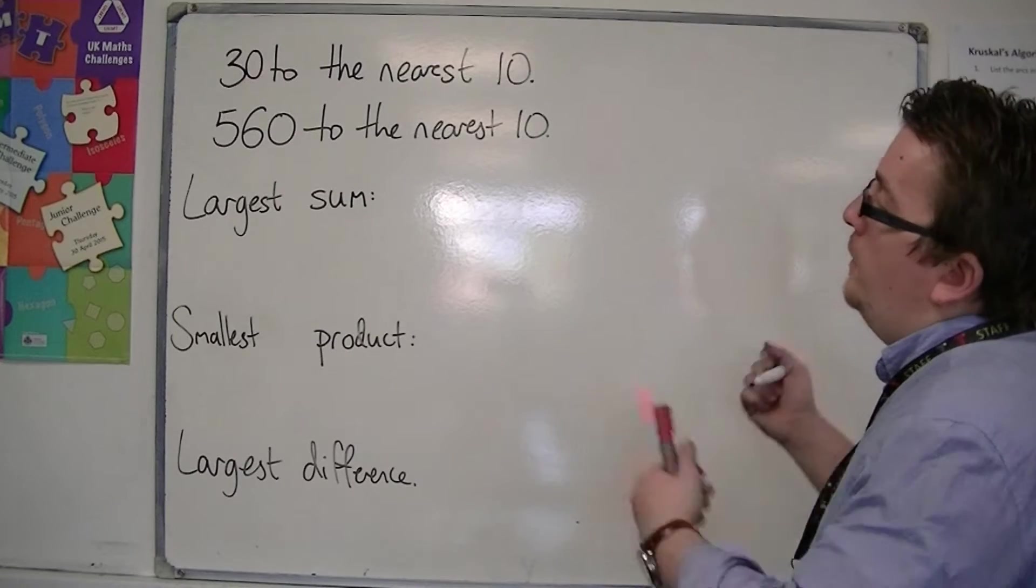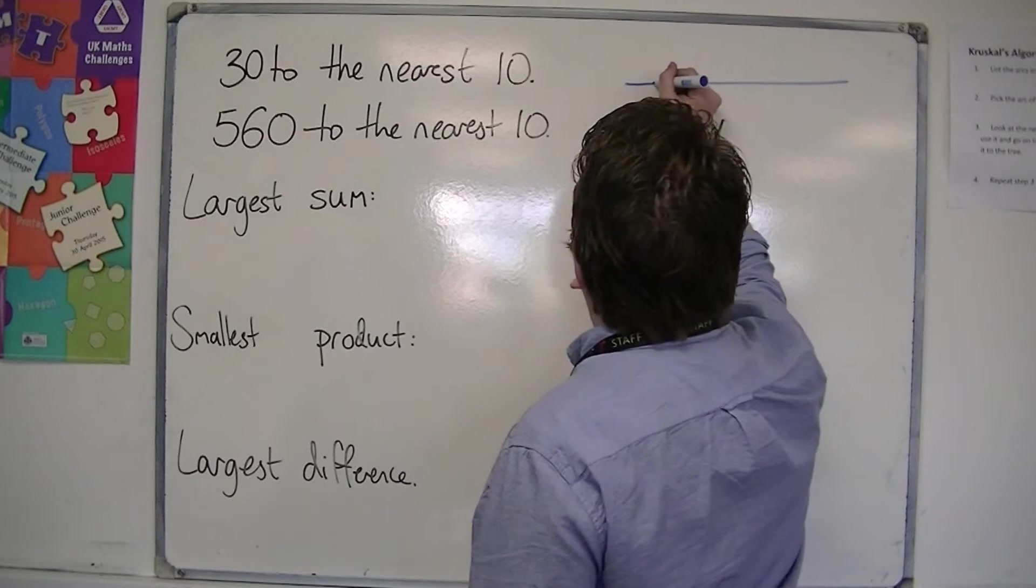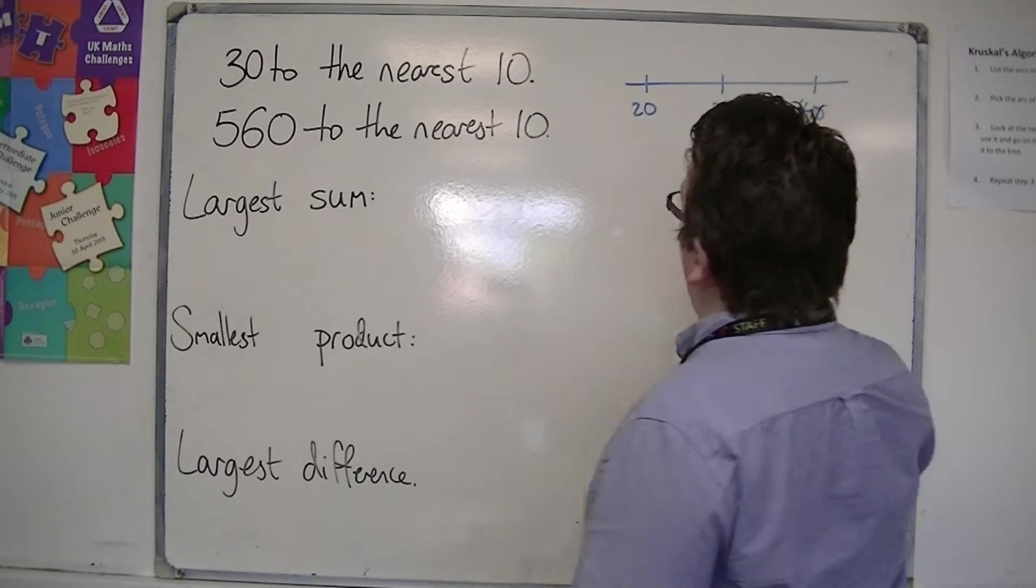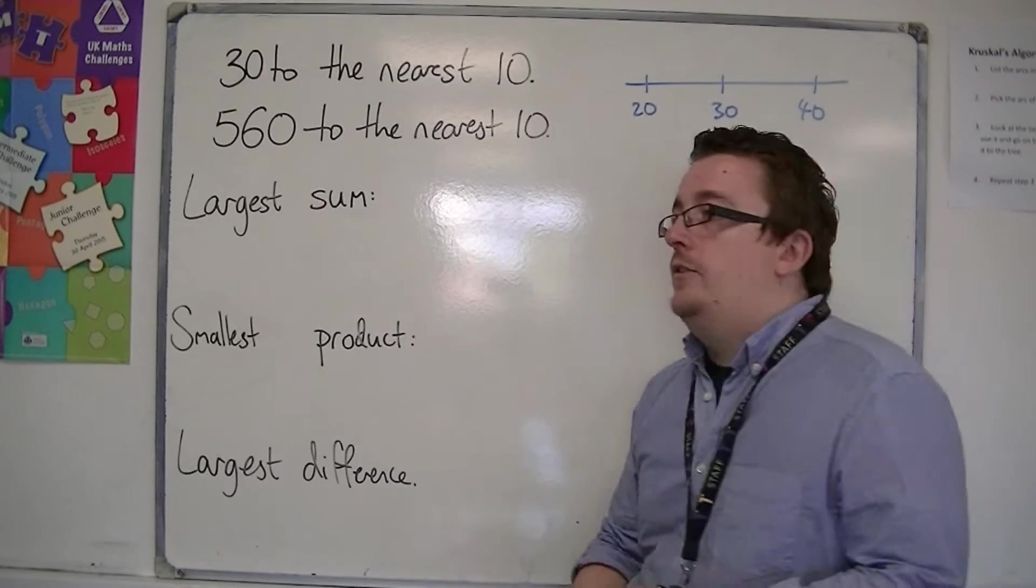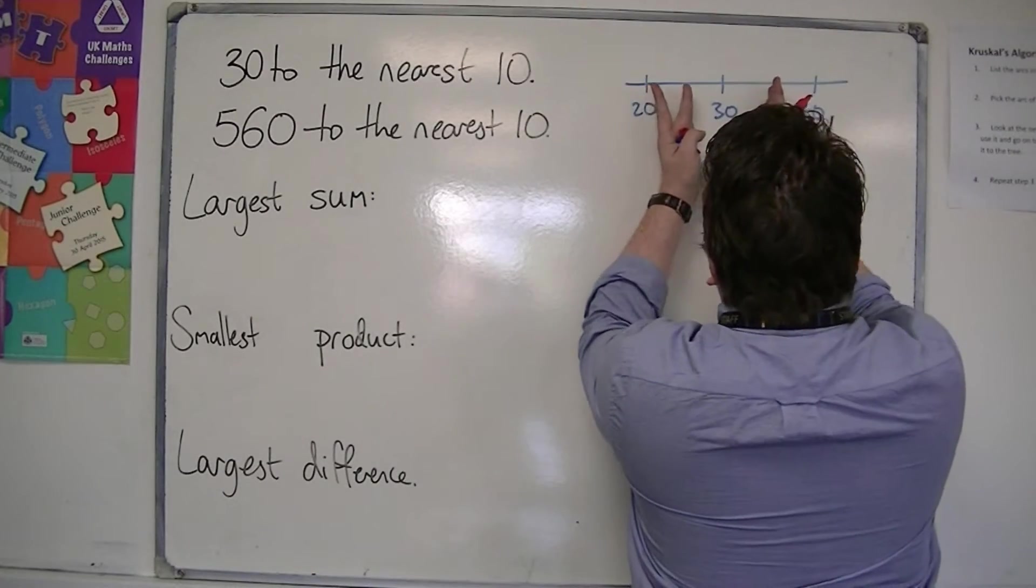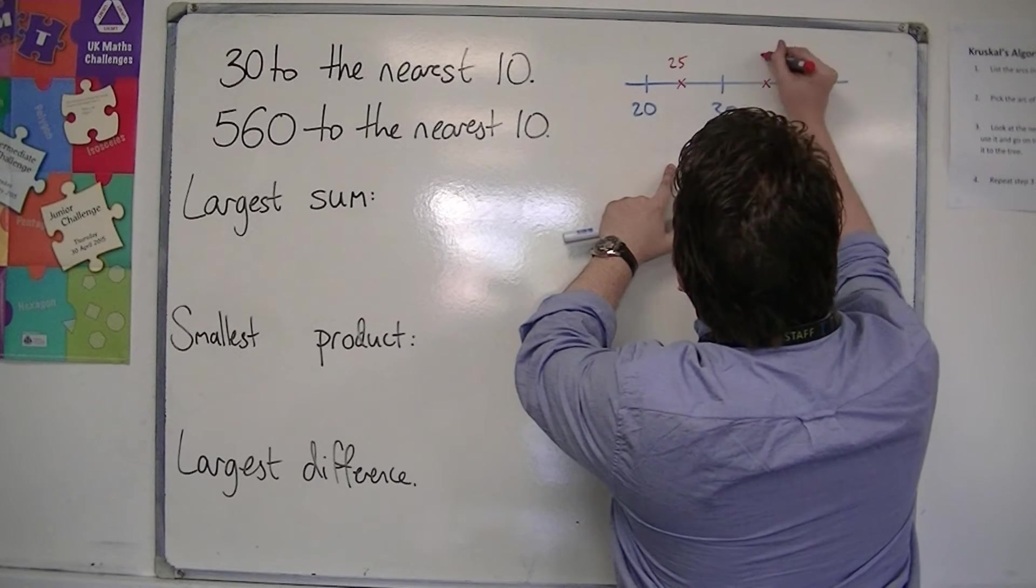So if we look at 30 first, and it's been rounded to the nearest ten, then what we're seeing here is that if it has been rounded to the nearest ten, the number could be anywhere between 25 and 35.